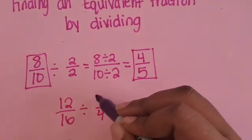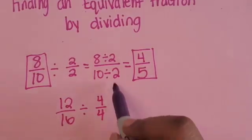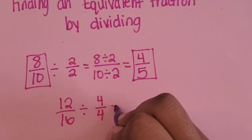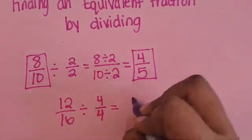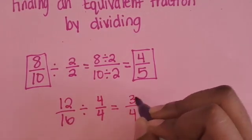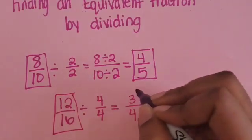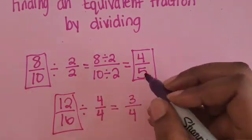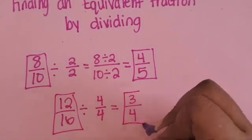Our numerator and denominator match, so they are equivalent to 1 whole. I'm not going to rewrite it this time. 12 divided by 4 is 3. 16 divided by 4 is 4. So 12/16 is equivalent to 3/4.